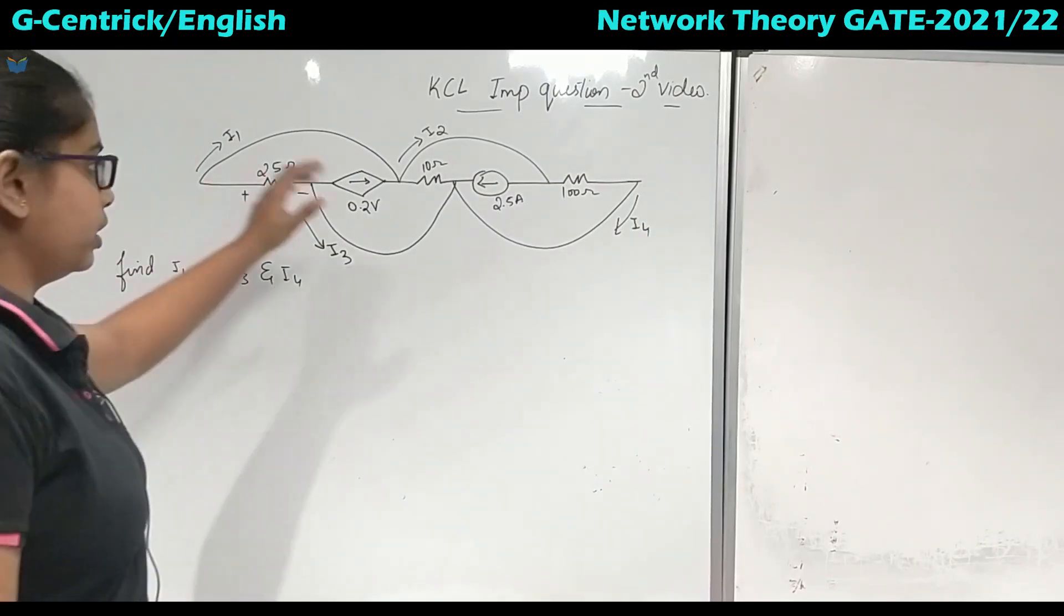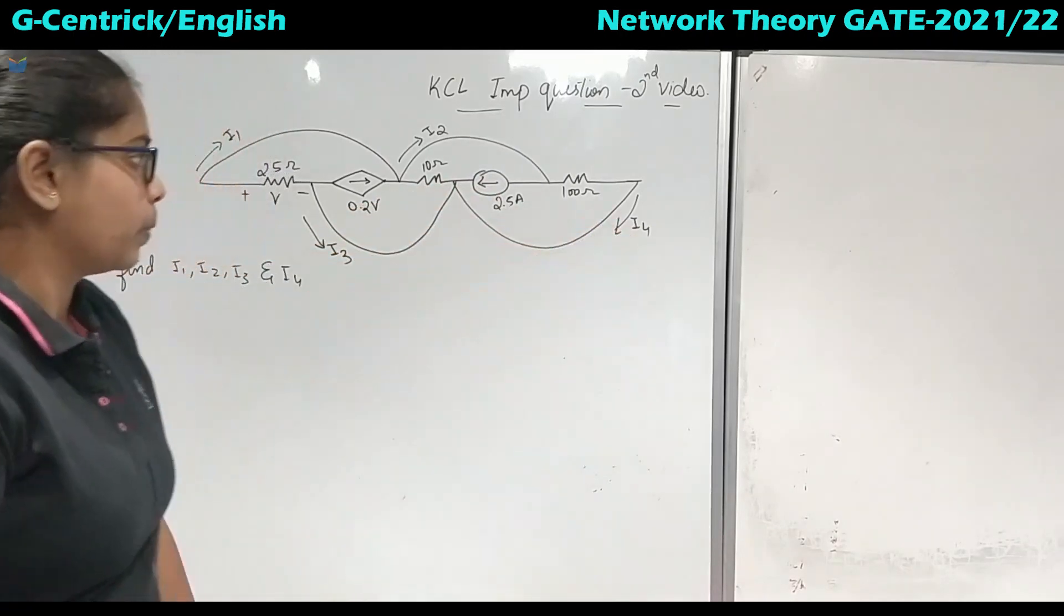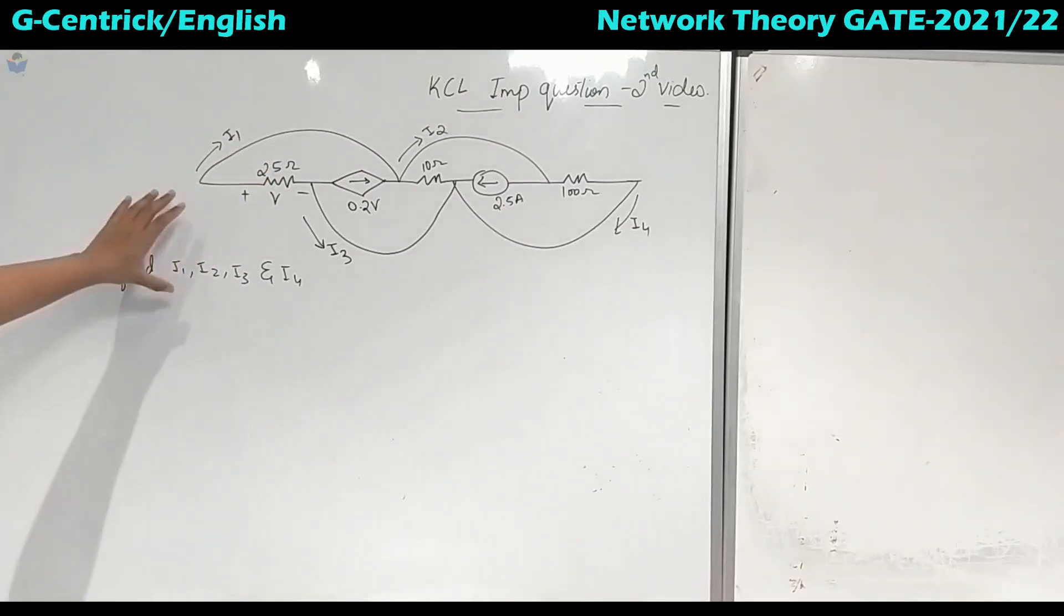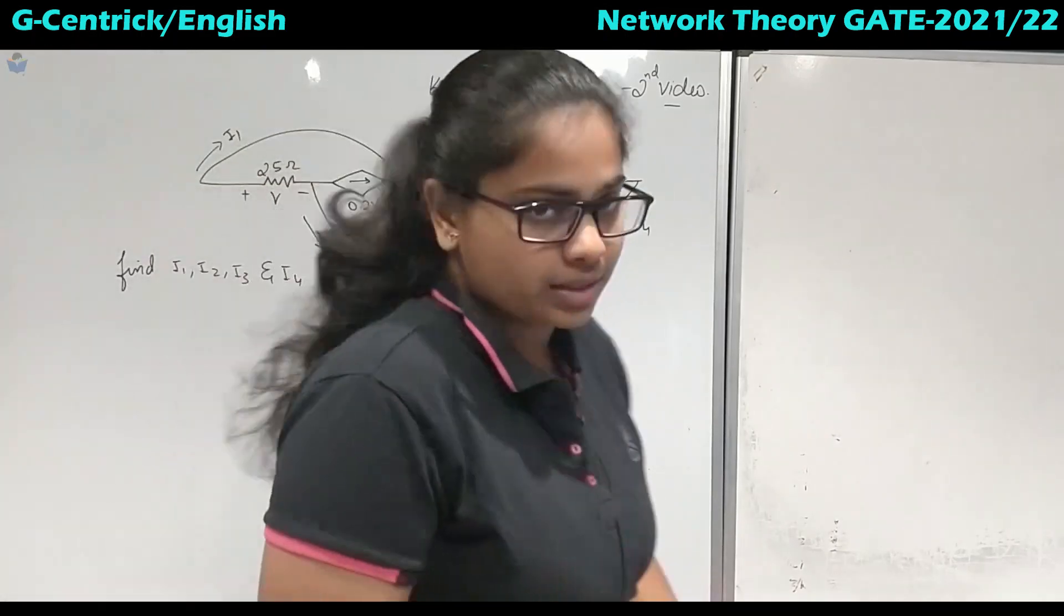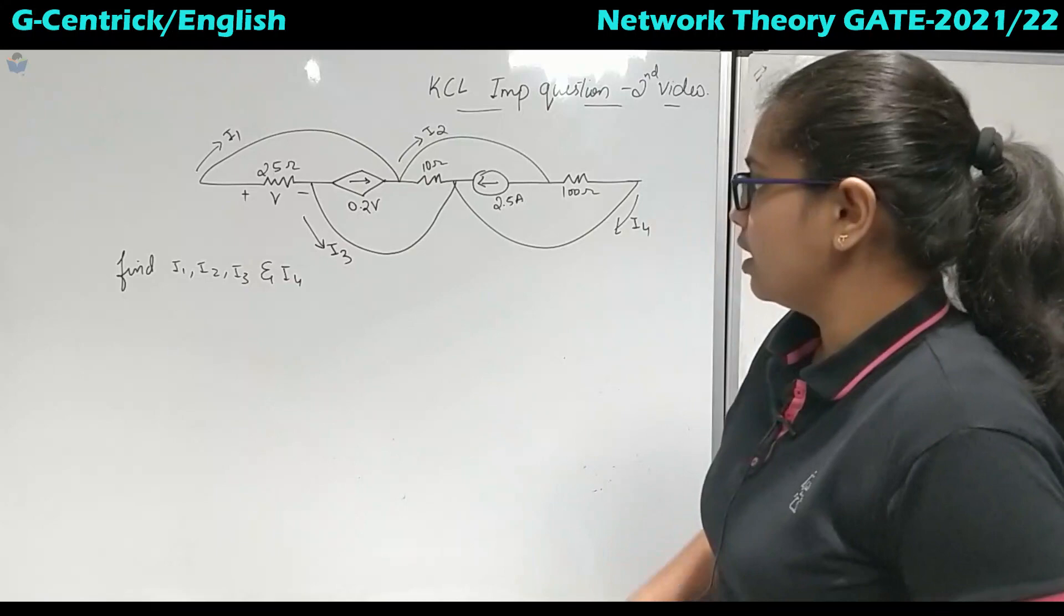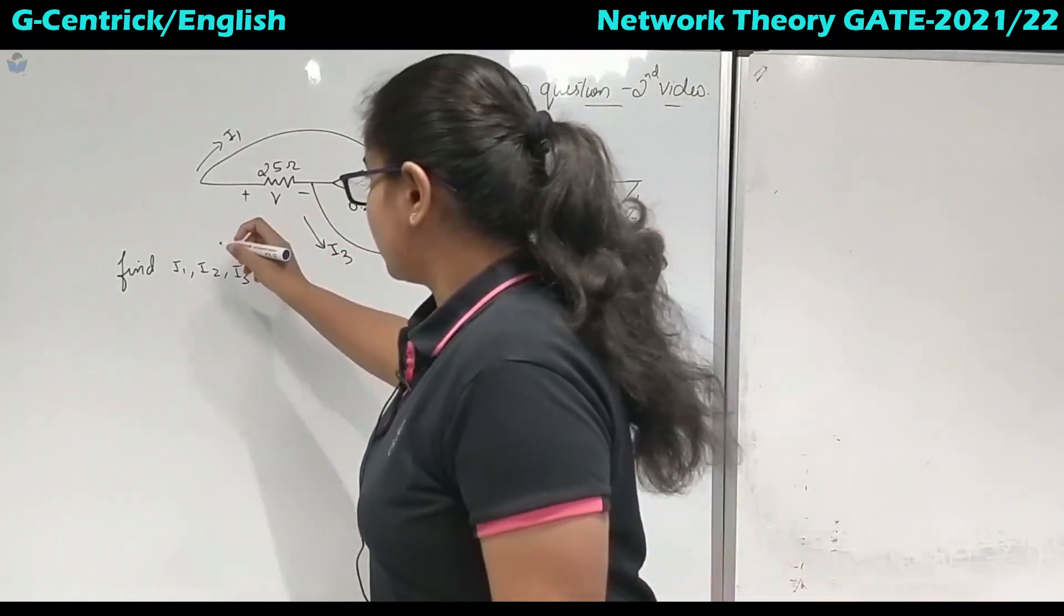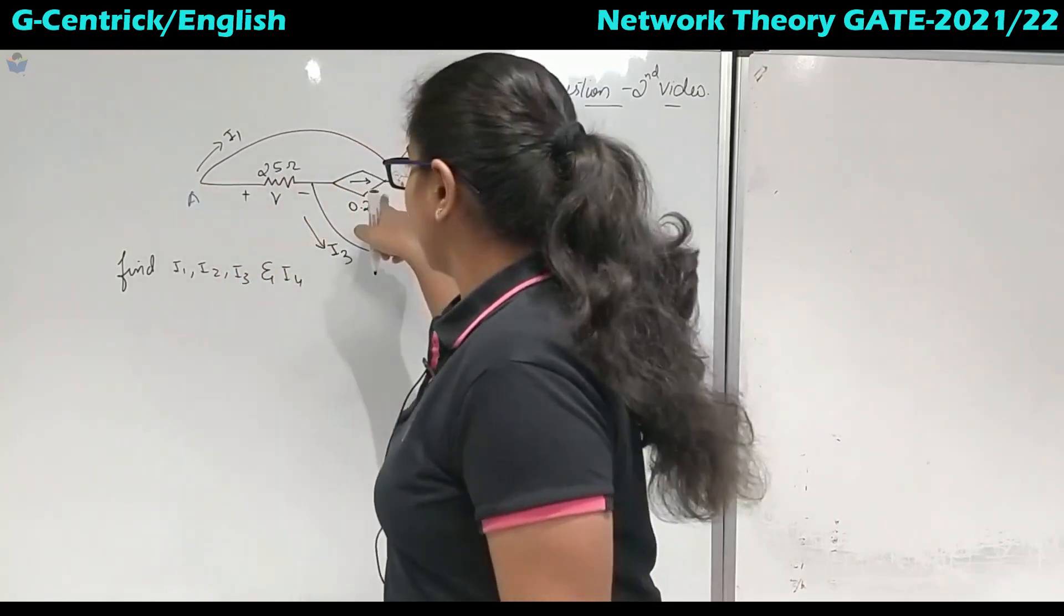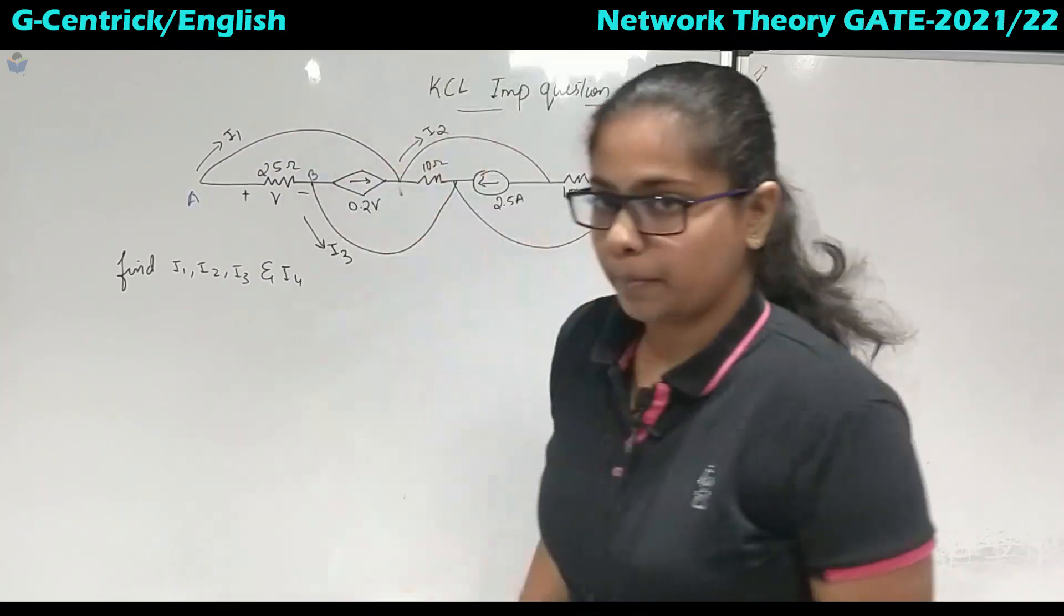There was some correction here because the polarity and the I4 current direction was changed. By mistake we took it wrong. Now in this video we will solve it again from the starting so it will be clearer. When you find a zigzag pattern, we know we have to arrange it into a neat circuit diagram. So now if this is a zigzag pattern, I will take this point as A and this point as B.